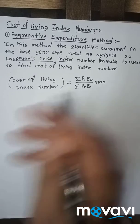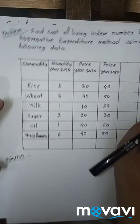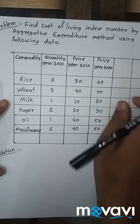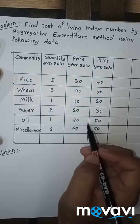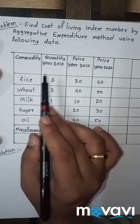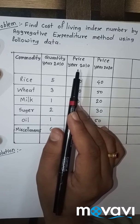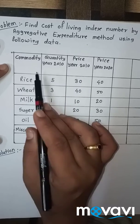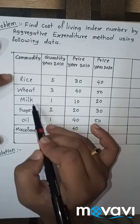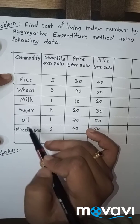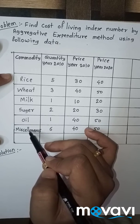Then we take one problem. Suppose we have given this problem: Find cost of living index number by aggregative expenditure method using the following data. Commodities given are rice, wheat, milk, sugar, oil, and miscellaneous.